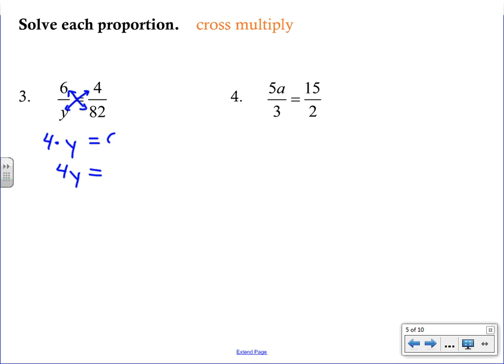It doesn't matter because they're equal. So you can start with either cross product. We've got 4 times y equals 4y. Then on the other side, we have 6 times 82, which gives us 492. This is just a simple one-step equation. In order to isolate the variable, right now we have 4 times y, so we have to do the opposite. We're going to divide both sides by 4. That reduces to y. When you divide that out, you get 123.